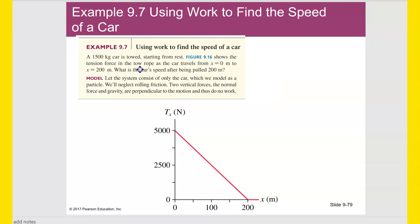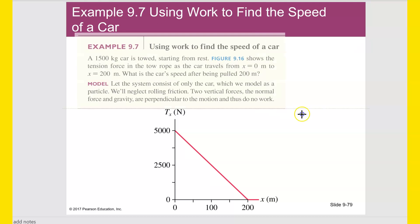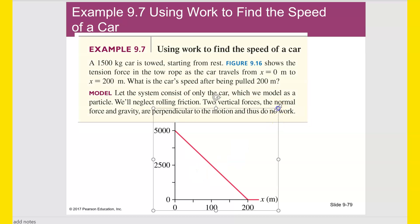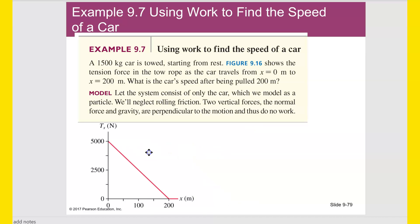Example 9.7 using work to find the speed of a car. Let's make this bigger. A 1500 kilogram car is towed starting from rest. This figure shows the tension force in the rope as the car travels from zero to 200. So this is force as it goes along a distance x. So obviously this force is varying, it's changing, it's not constant. But as the car is pulled along this distance of x, the tension in the rope changes accordingly. So it is a function of that displacement.